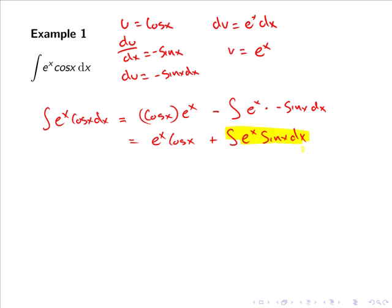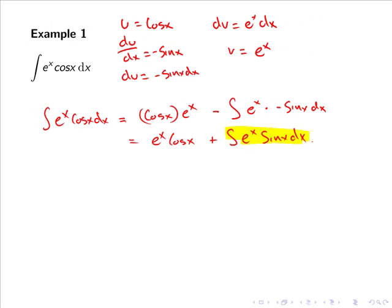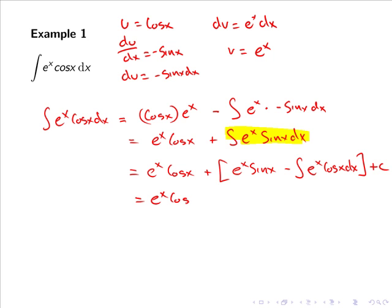Returning to our main integral, we have that the integral of eˣ cos(x) dx equals eˣ cos(x) plus the integral of eˣ sin(x) dx, which we just found out was eˣ sin(x) minus the integral of eˣ cos(x) dx. Substituting in this value we have eˣ cos(x) plus eˣ sin(x) minus the integral of eˣ cos(x) dx. Now that we have finished integrating we can add on a constant, plus c.